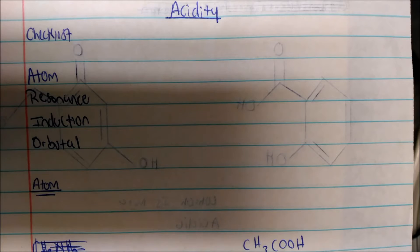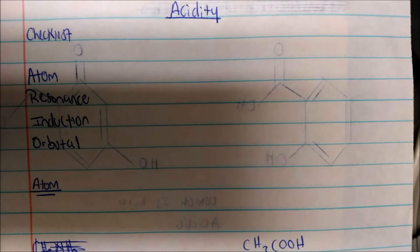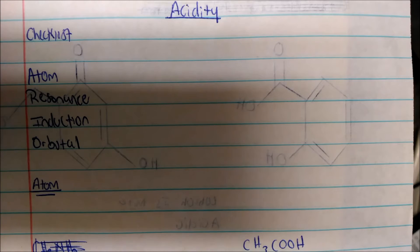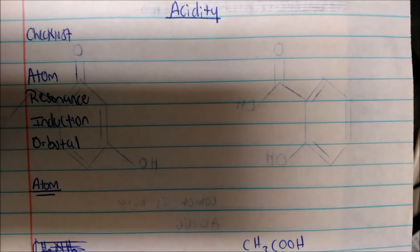In this video we're going to talk about acidity — circling and identifying the most acidic proton, but generally acidity and how we can define an acid that's actually stronger or weaker. There's a checklist we check off to make sure before we can say this is more acidic or this proton is more acidic.